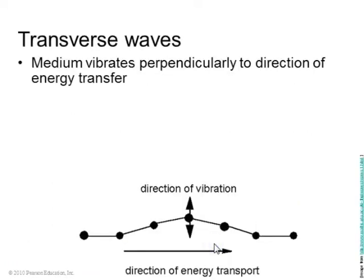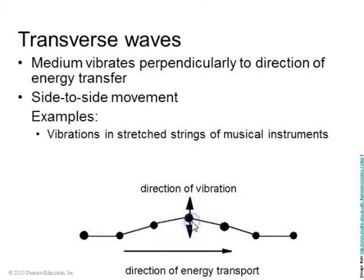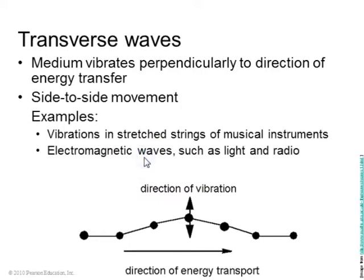There's two kinds of waves, transverse waves and longitudinal. In the transverse wave, the direction of vibration is perpendicular to the direction that energy travels. This is characterized by a side-to-side movement. Examples would be a vibration in a string or electromagnetic waves, such as light and radio. The electric field oscillates perpendicular to the direction that the light moves.